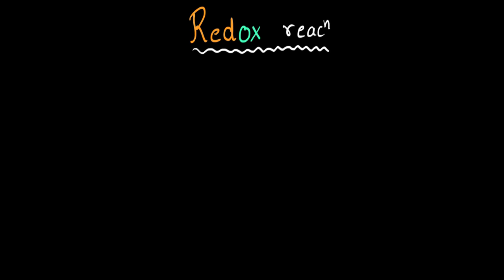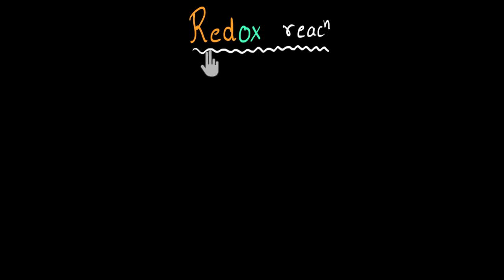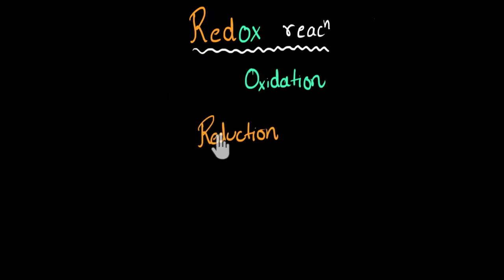In short, any reaction in which both reduction and oxidation happen at the same time will be called a redox reaction. That's how it gets its name — redox. Both reduction and oxidation should be happening. In a separate video, we have talked about this in much detail about oxidation and reduction.